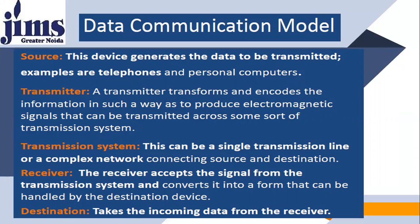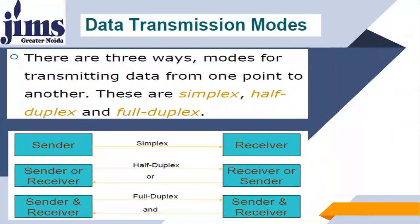The transmission system or medium can be a single transmission line or a complex network connecting source and destination — maybe a coaxial cable, maybe optical fiber. The receiver accepts the signal transmitted by the transmitter and converts it into a form handled by the destination device. The receiver recovers the electrical signal from the digital signal and converts it back into a physical quantity. The destination then takes the incoming data from the receiver.